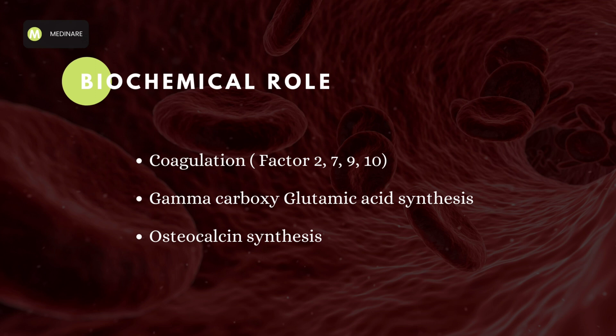Vitamin K dependent gamma carboxylation is also necessary for the functional activity of osteocalcin, as well as the structural proteins of the kidney, lung and spleen. Osteocalcin is synthesized by the osteoblast and is seen only in the bone.